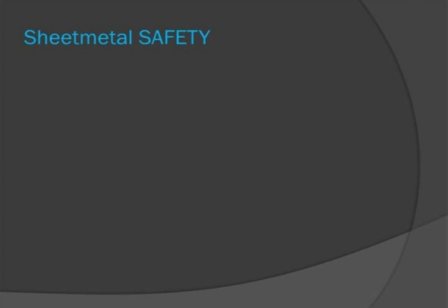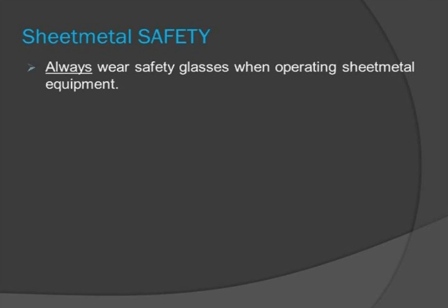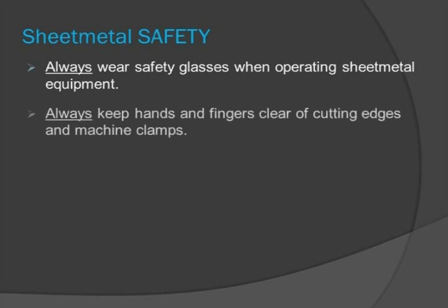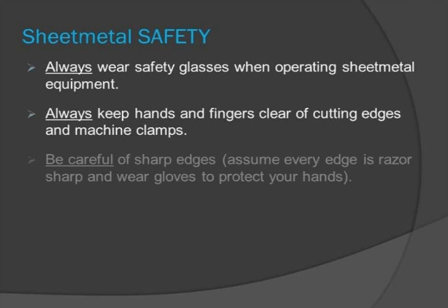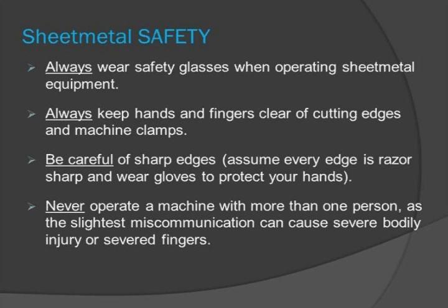Before using the equipment, it is crucial to cover some basic safety rules. Always wear safety glasses when operating sheet metal equipment. Always keep your hands and fingers clear of cutting edges and machine clamps. Be careful of sharp edges on sheet metal parts. Assume every edge is razor sharp and always wear gloves to protect your hands when working on any unpowered sheet metal equipment. Never operate a machine with more than one person, as the slightest miscommunication can cause severe bodily injury or severed fingers.